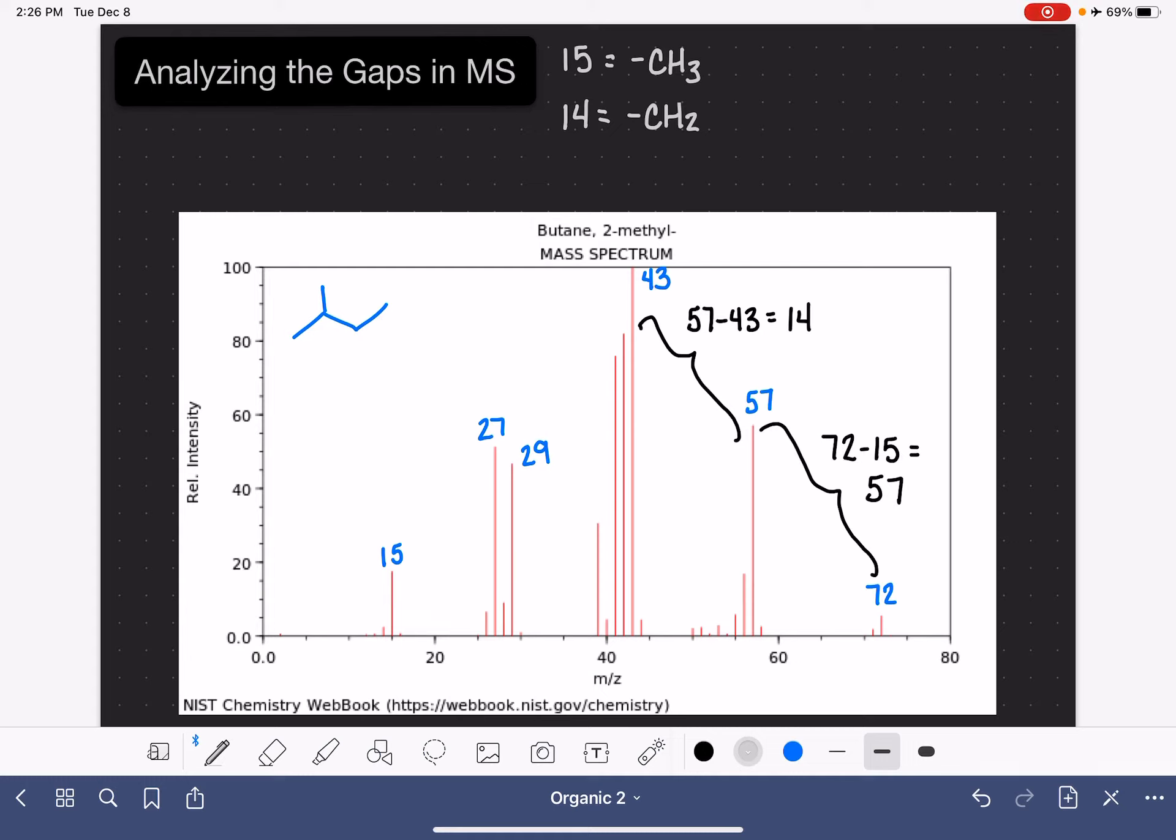And we can also take a look at this gap right here, the difference between 72 and 43. That's going to correspond to a fragment of 29. 29 is the mass of an ethyl group, CH2CH3. So we can see there are some pretty logical patterns that we can find when we're looking at these different gaps or these different portions that are coming off of the molecule.